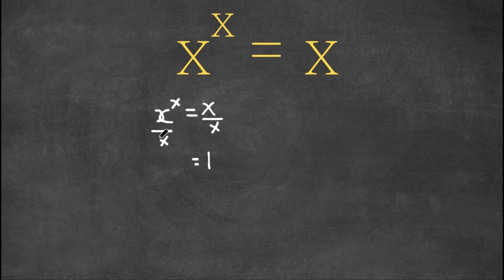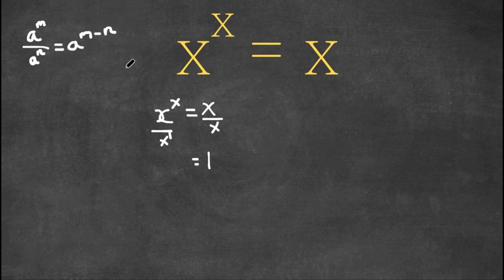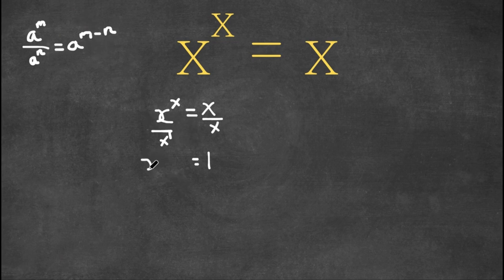Now on the left-hand side, we have x to the power of x divided by x, and x in the denominator can be written as x to the power of 1. If you recall an important property of exponents, it states that a to the power of m over a to the power of n equals a to the power of m minus n. So here we have x to the power of x divided by x to the power of 1, giving us x to the power of x minus 1.